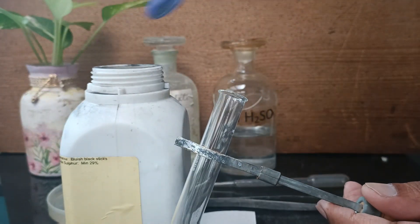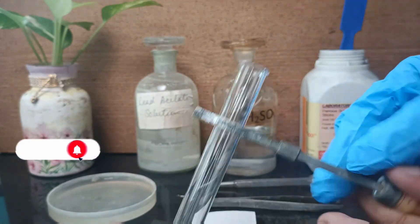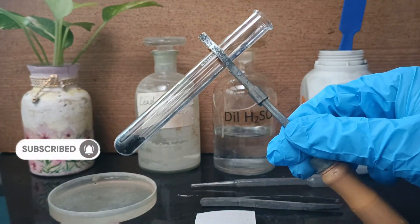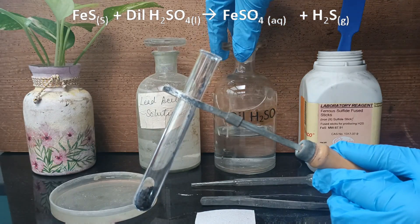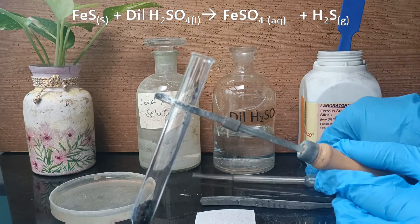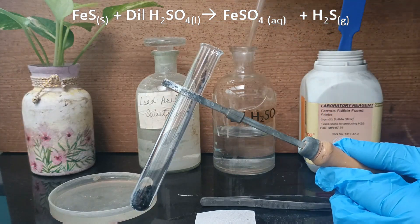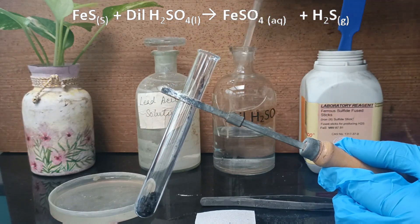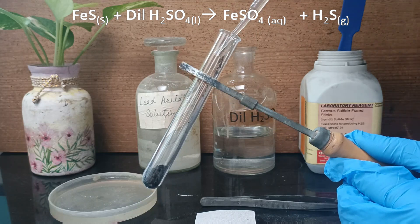Using a dropper, we will take about 1 ml of dilute sulfuric acid and pour it into the test tube. The reaction is very slow, liberating hydrogen sulfide gas.